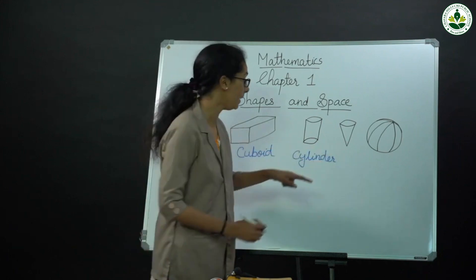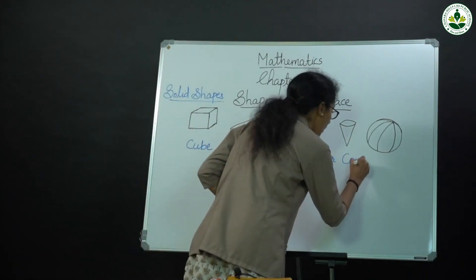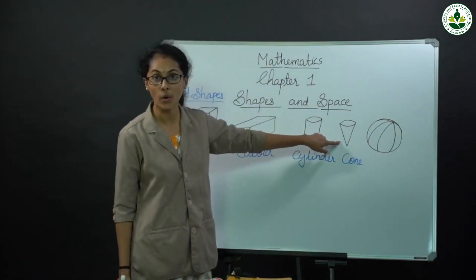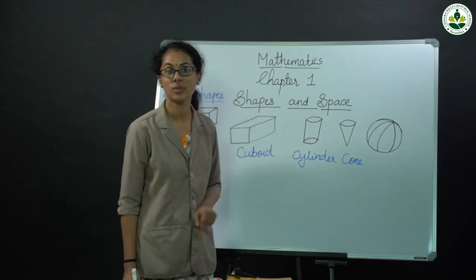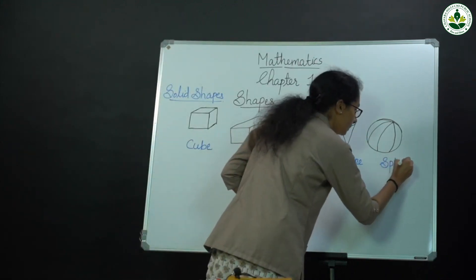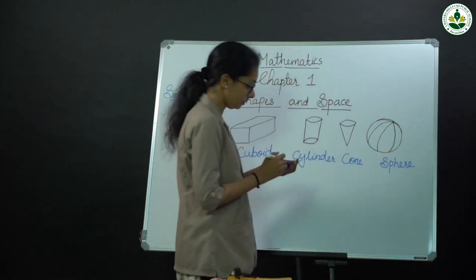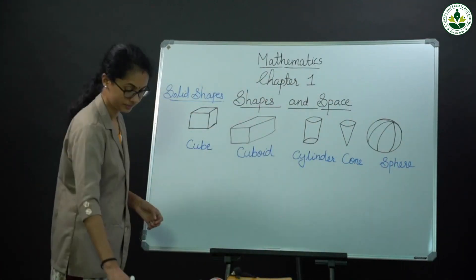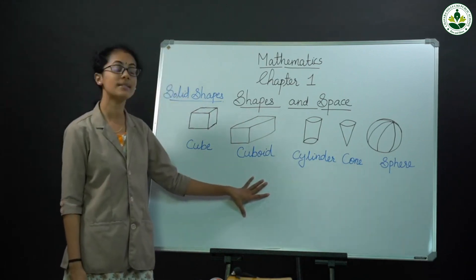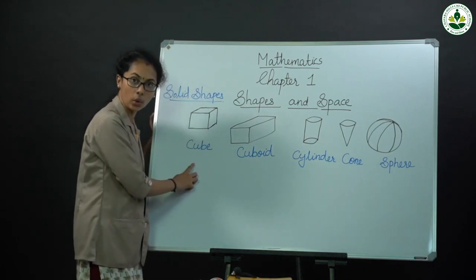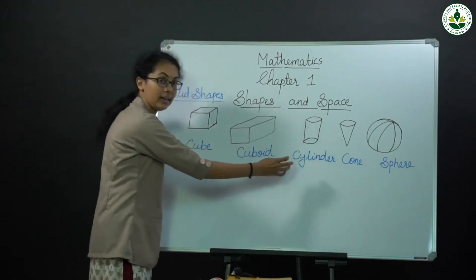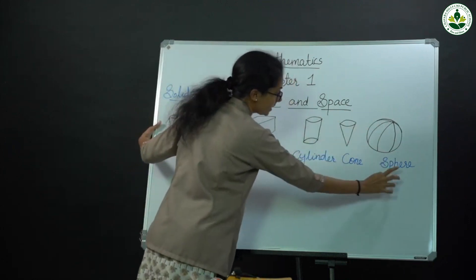Which shape is this one? This is cord. Which shape is this one? This is cord. Then which shape is this one? This is sphere. These are some solid shapes: cube, cuboid, cylinder, cord, and spear.